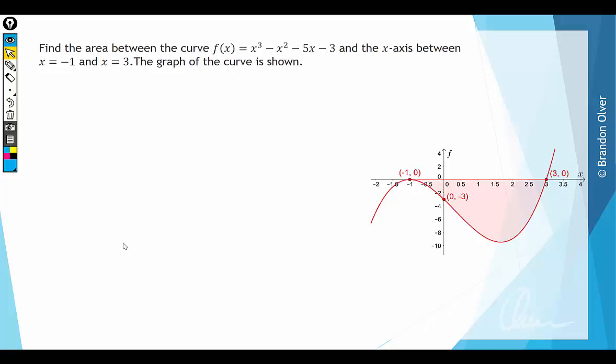Find the area between the curve f of x equals x cubed minus x squared minus 5x minus 3 and the x-axis between x equals negative 1 and x equals 3. The graph of the curve is shown.